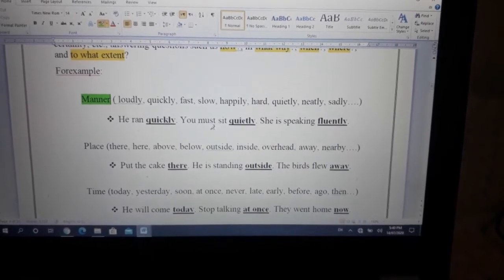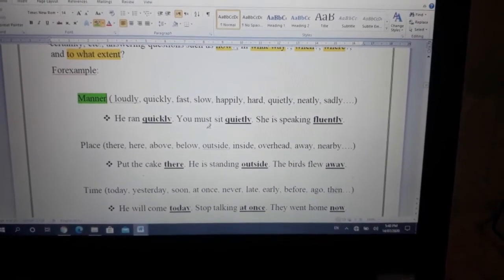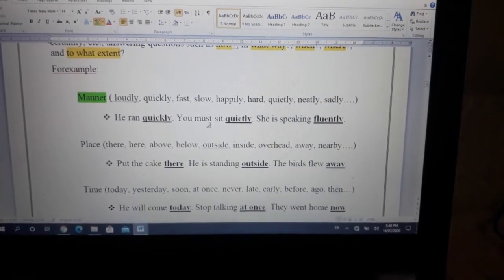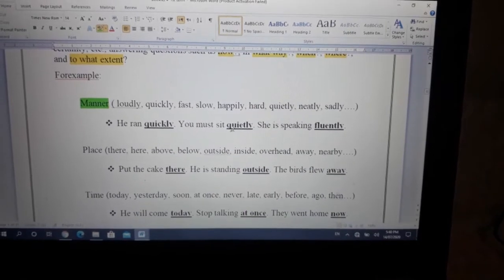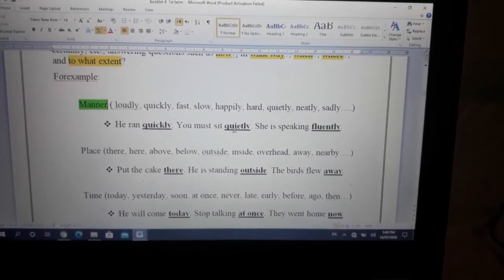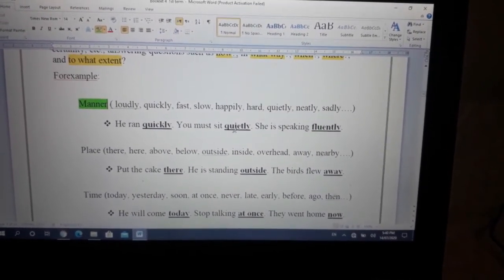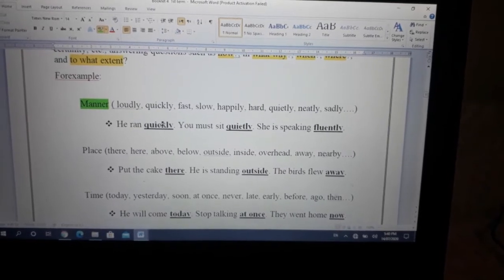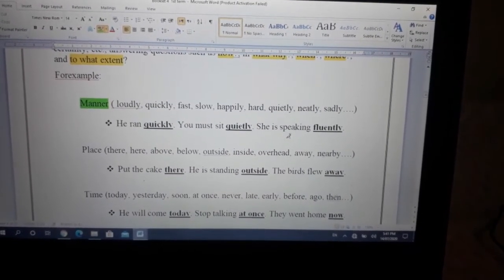For example, if I say he ran quickly. How did he run? He ran quickly. You must sit quietly. How should you sit? You must sit quietly. The next one is she is speaking fluently. How is she speaking? She is speaking fluently.